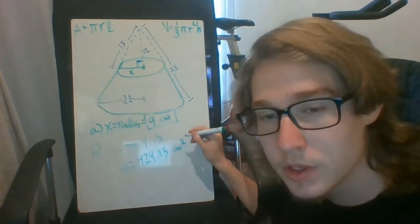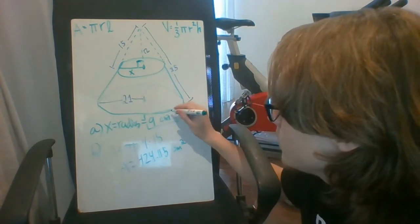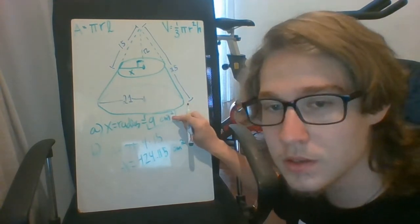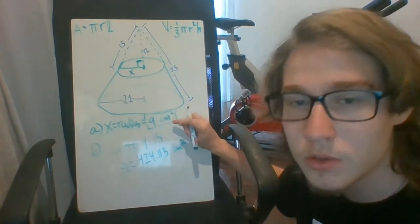The reason it's squared is because we're dealing with area. The reason this is to the power 1 is because it deals with distance, and with volume, the units are going to be cubed.